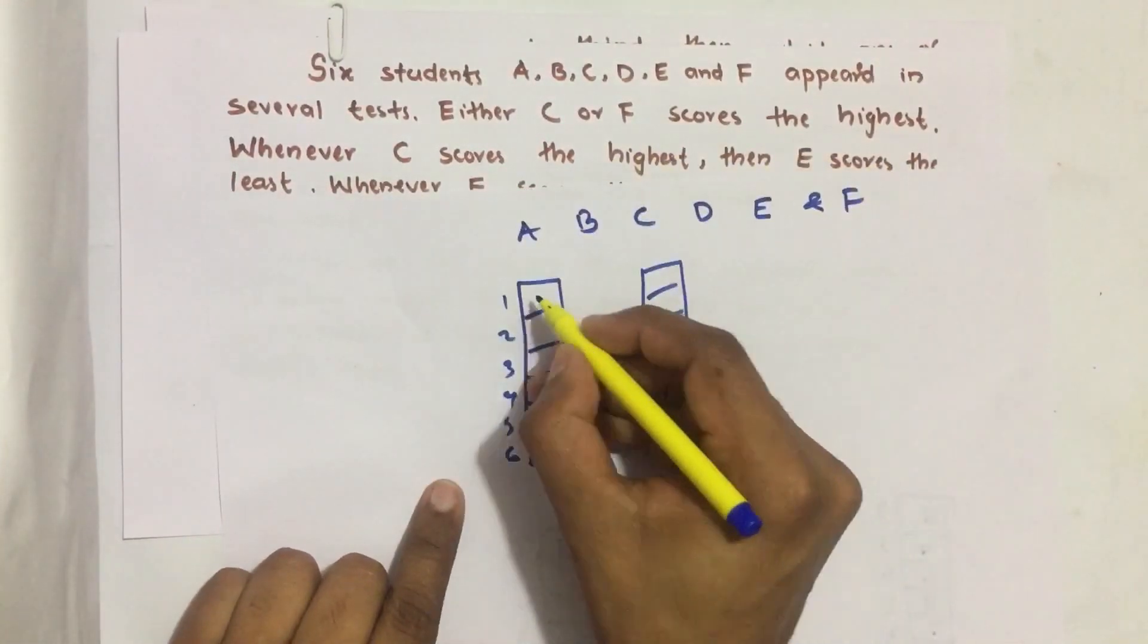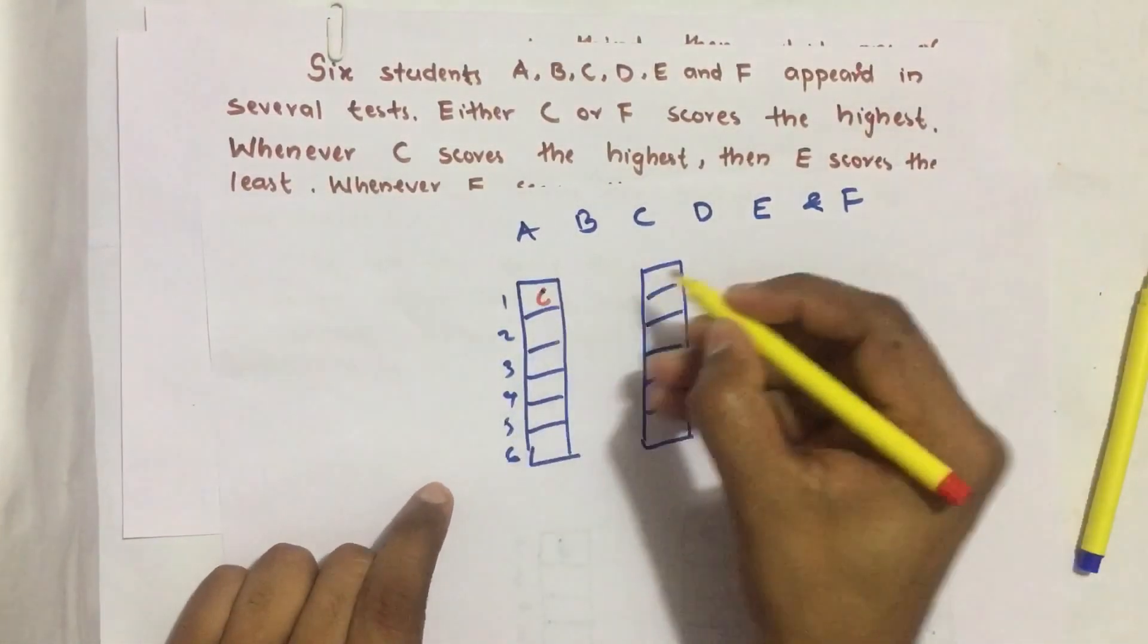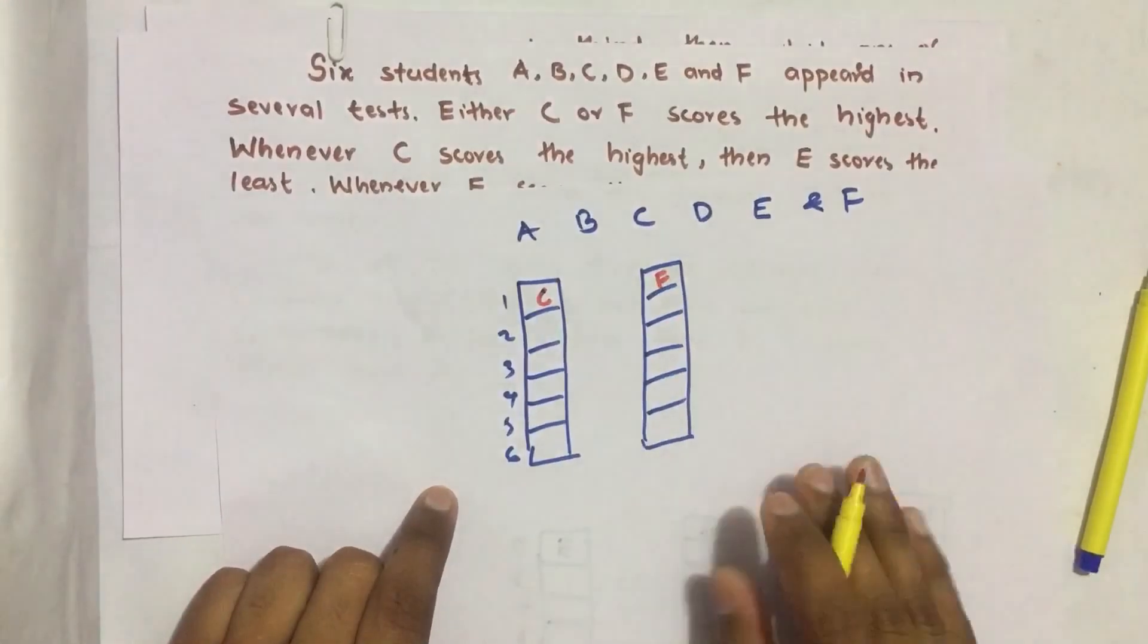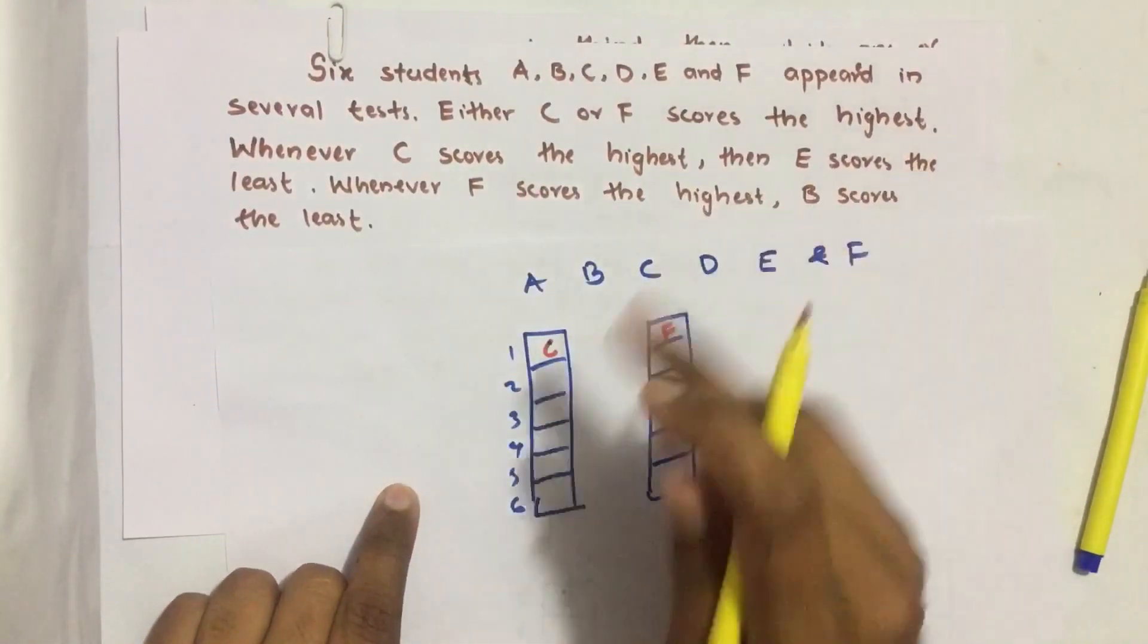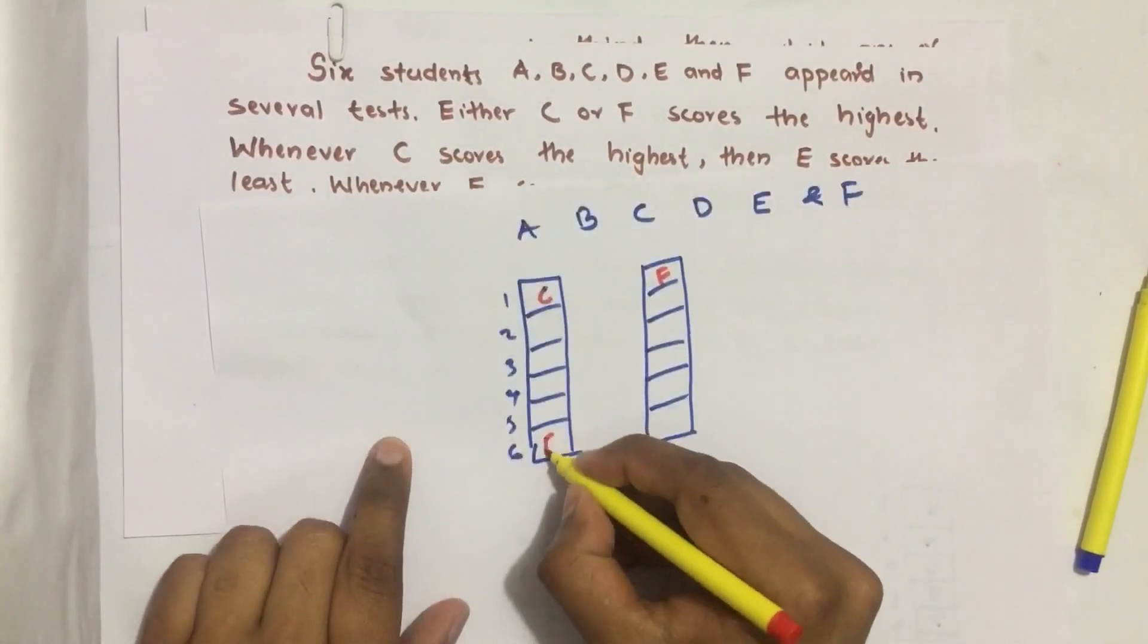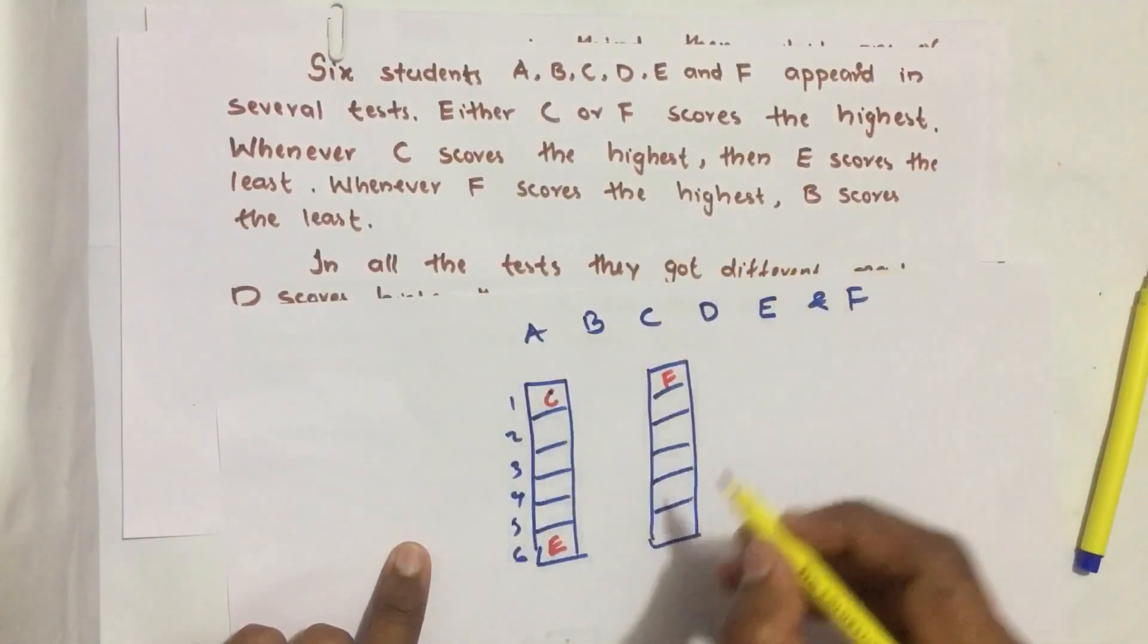C or F scores the highest. Whenever C scores the highest, then E scores the least. Sixth will be E. Whenever F scores the highest, B scores the least. If F is highest, B at bottom.